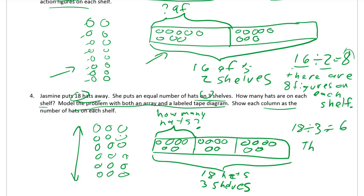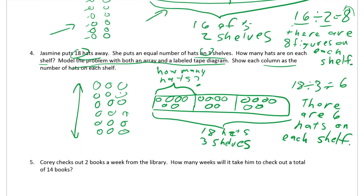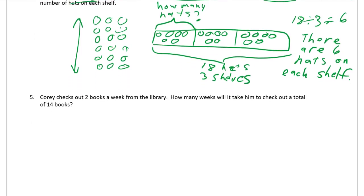There are six hats on each shelf. You've got to have all of that: the tape diagram, the labels, the equation, and the answer statement. Now we're down to our last problem.